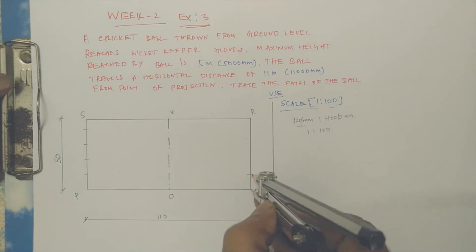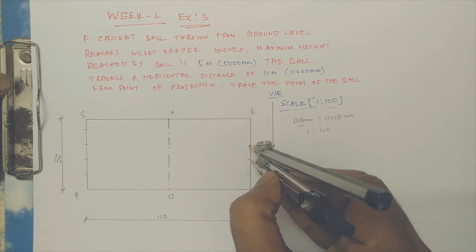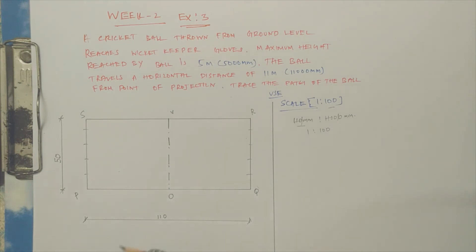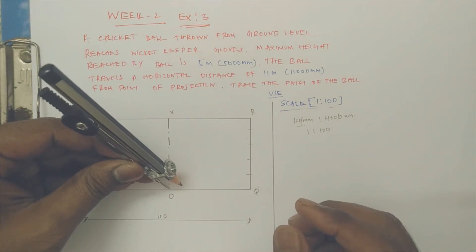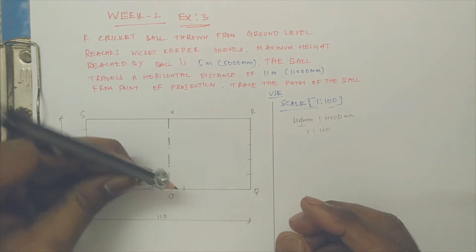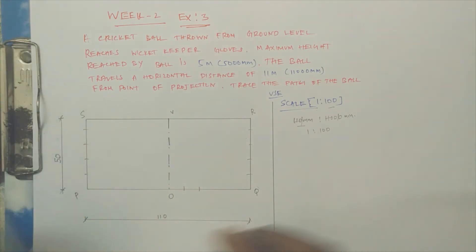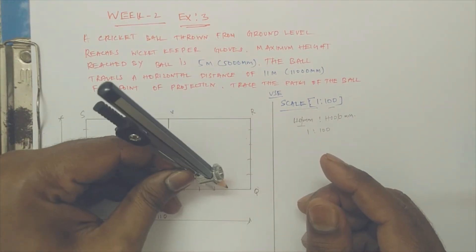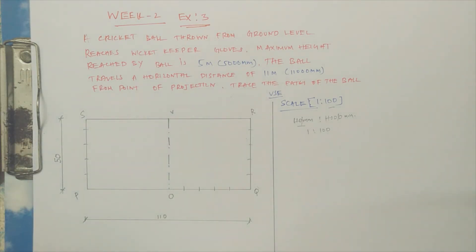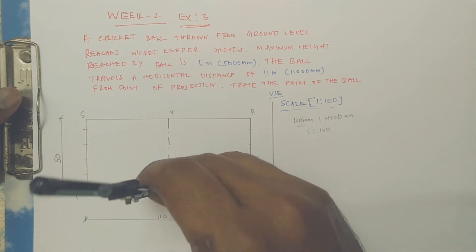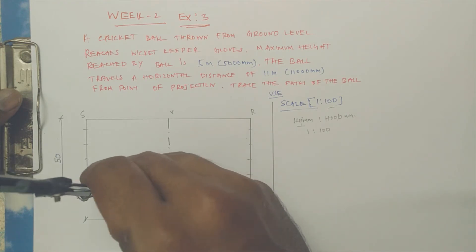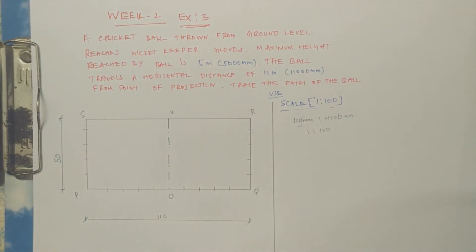From P I am making one, two, three, four. When there are four intersections, there will be five divisions. One, two, three, four. Obviously this direction also you can make in the same manner.